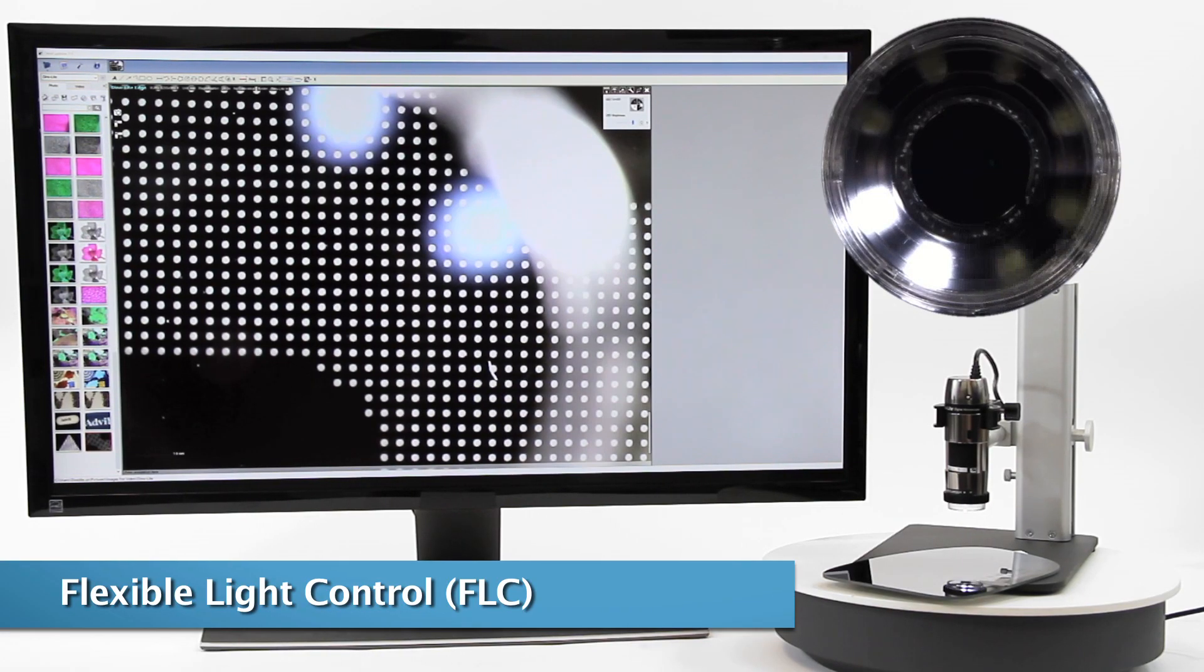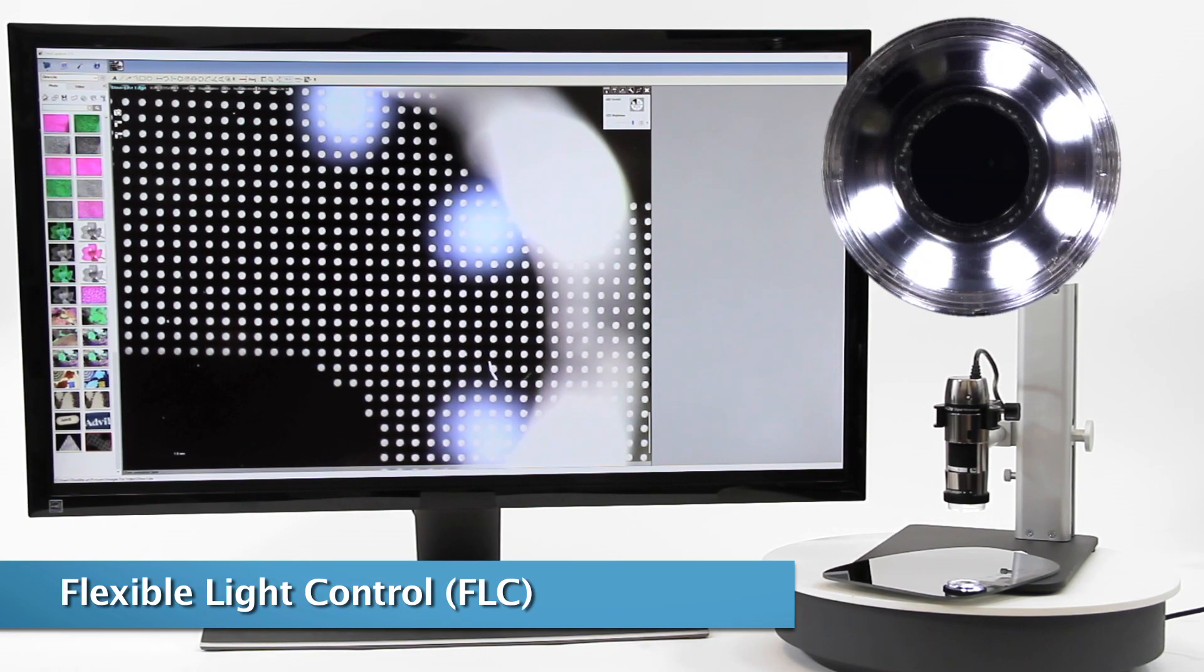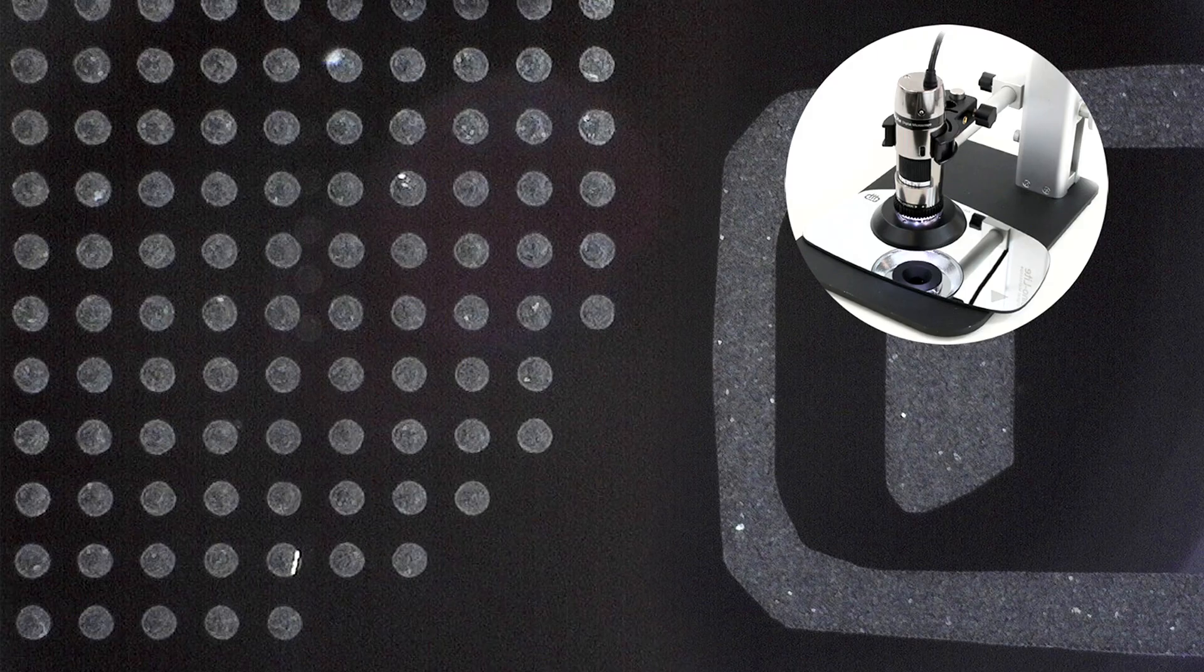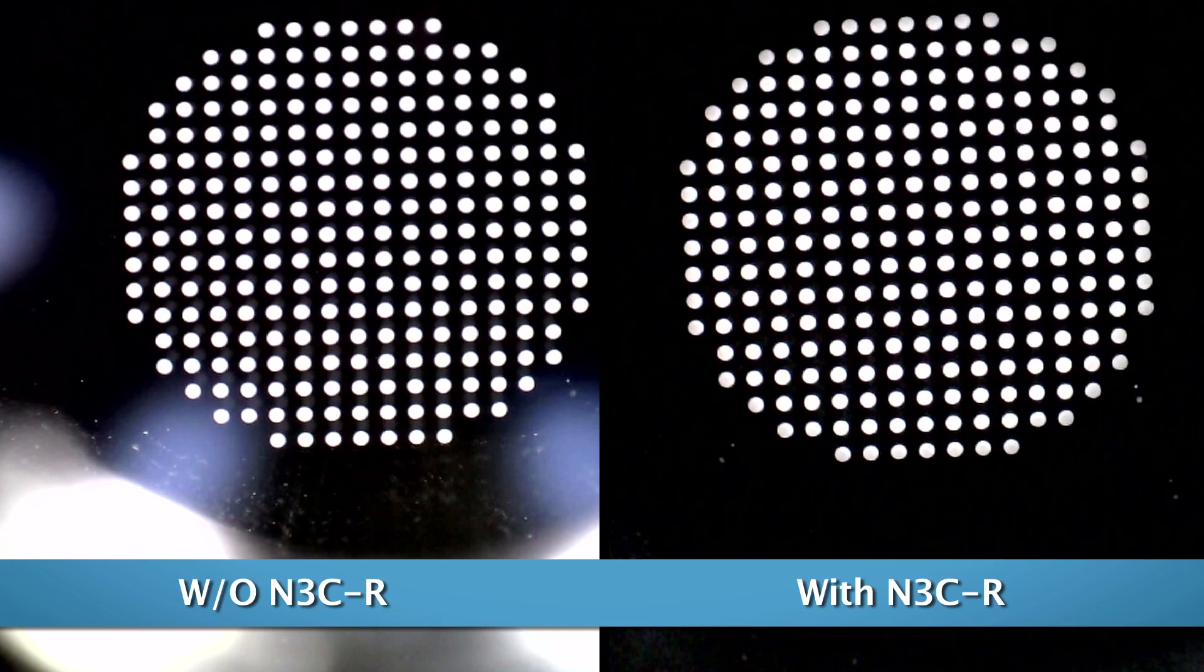The 5-megapixel Dino-Lite Edge models with FLC or flexible light control can also help by switching on or off the LEDs by quadrant or adjusting the brightness level of all LEDs.